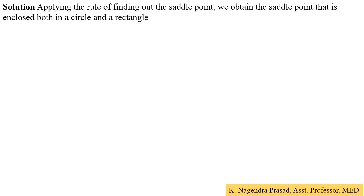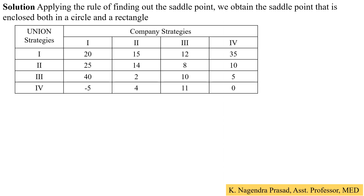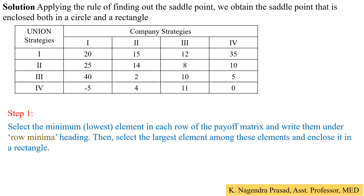Step 1: Select the minimum element in each row of the payoff matrix and write them under the row minima heading. Then select the largest element among these row minima and enclose it in a rectangle. This largest row minimum is called the maximin value.